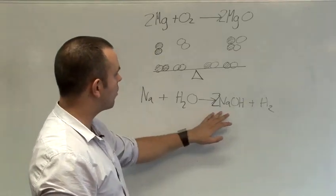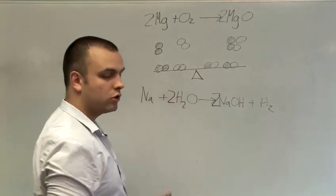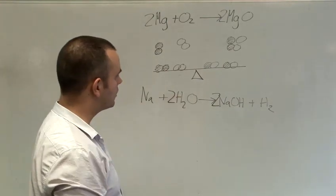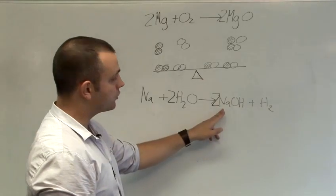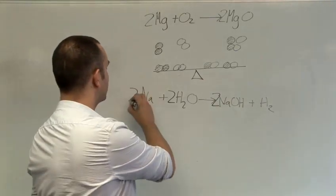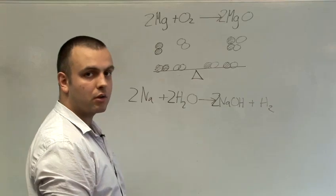Here now we have four hydrogens. So if we put two in front of the water now we have four hydrogens there as well. However we also have two sodiums now. If we put two in front of the sodium, that balances the equation.